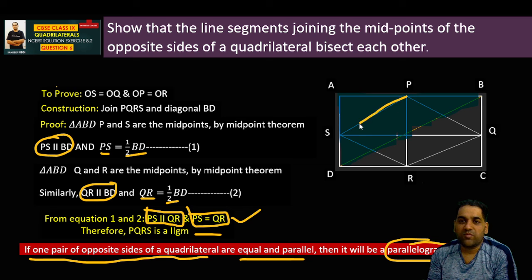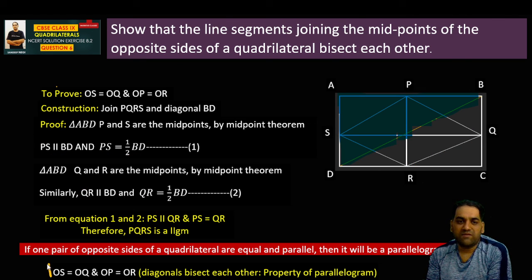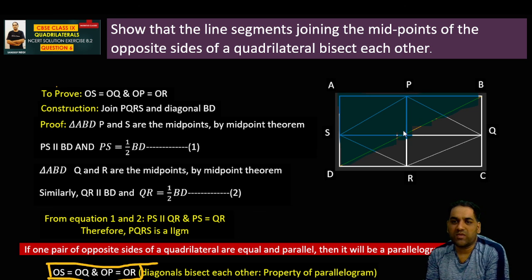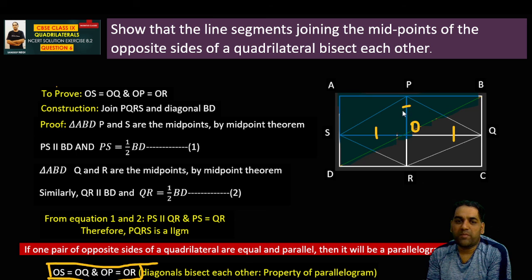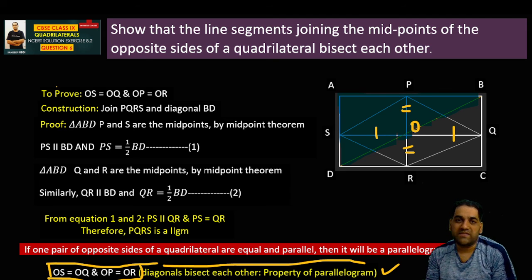So finally, we have proved that PQRS is a parallelogram, and therefore the diagonals PR and QS bisect each other at O. So hopefully this question is clear. If you have any problem, write in the comment section. Thank you.